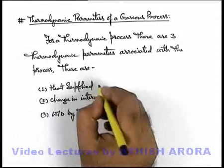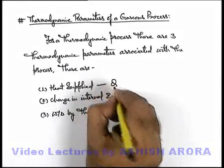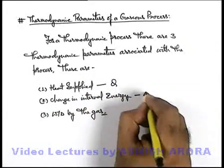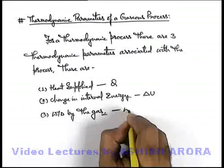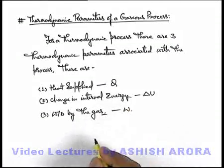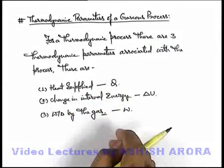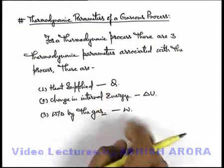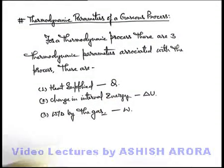For a complete process, heat supplied is denoted by the letter Q, change in internal energy is denoted by ΔU, and work done is denoted by the letter W. Let's discuss how we are going to use these three parameters mathematically in a process.